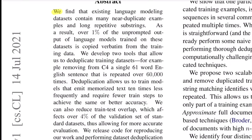We find that existing language modeling datasets contain many near duplicates, examples, and long repetitive strings. This is a pretty common problem in many large-scale datasets. If left untreated, they may introduce a bias in the model that might make these models remember these commonly occurring repetitive patterns. This paper proposes two techniques for efficiently deduplicating large-scale datasets in order to make these models better and robust.